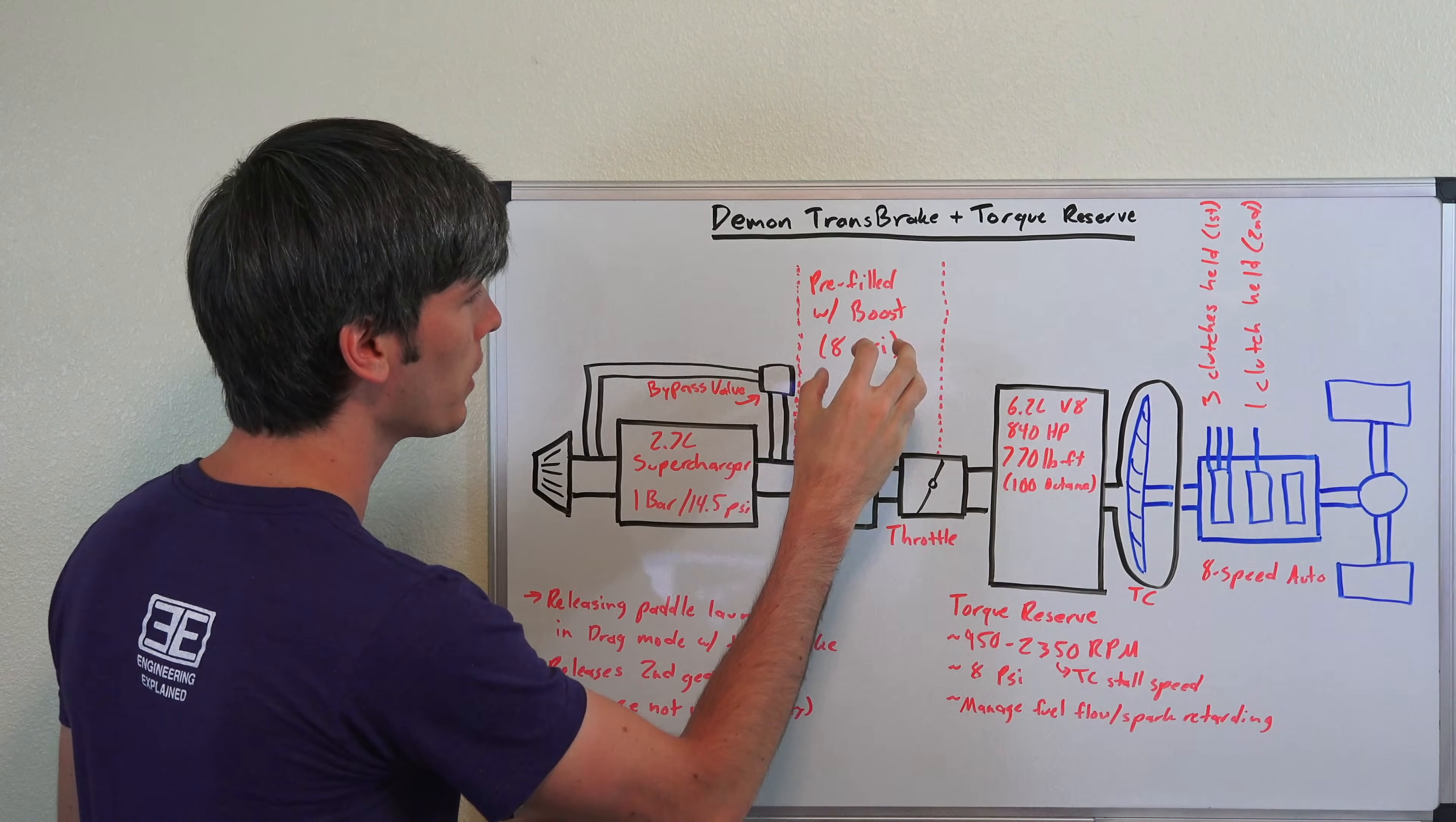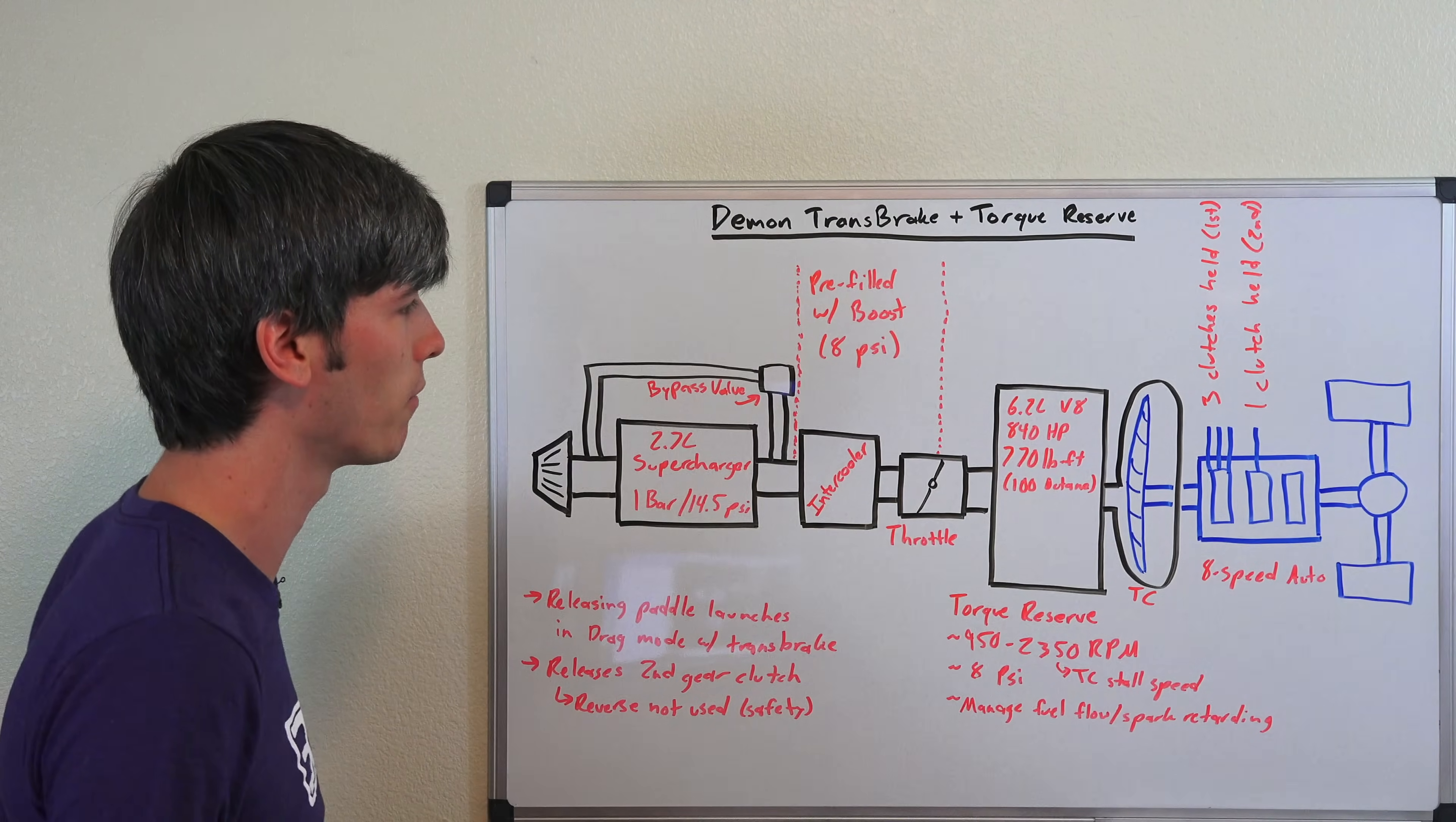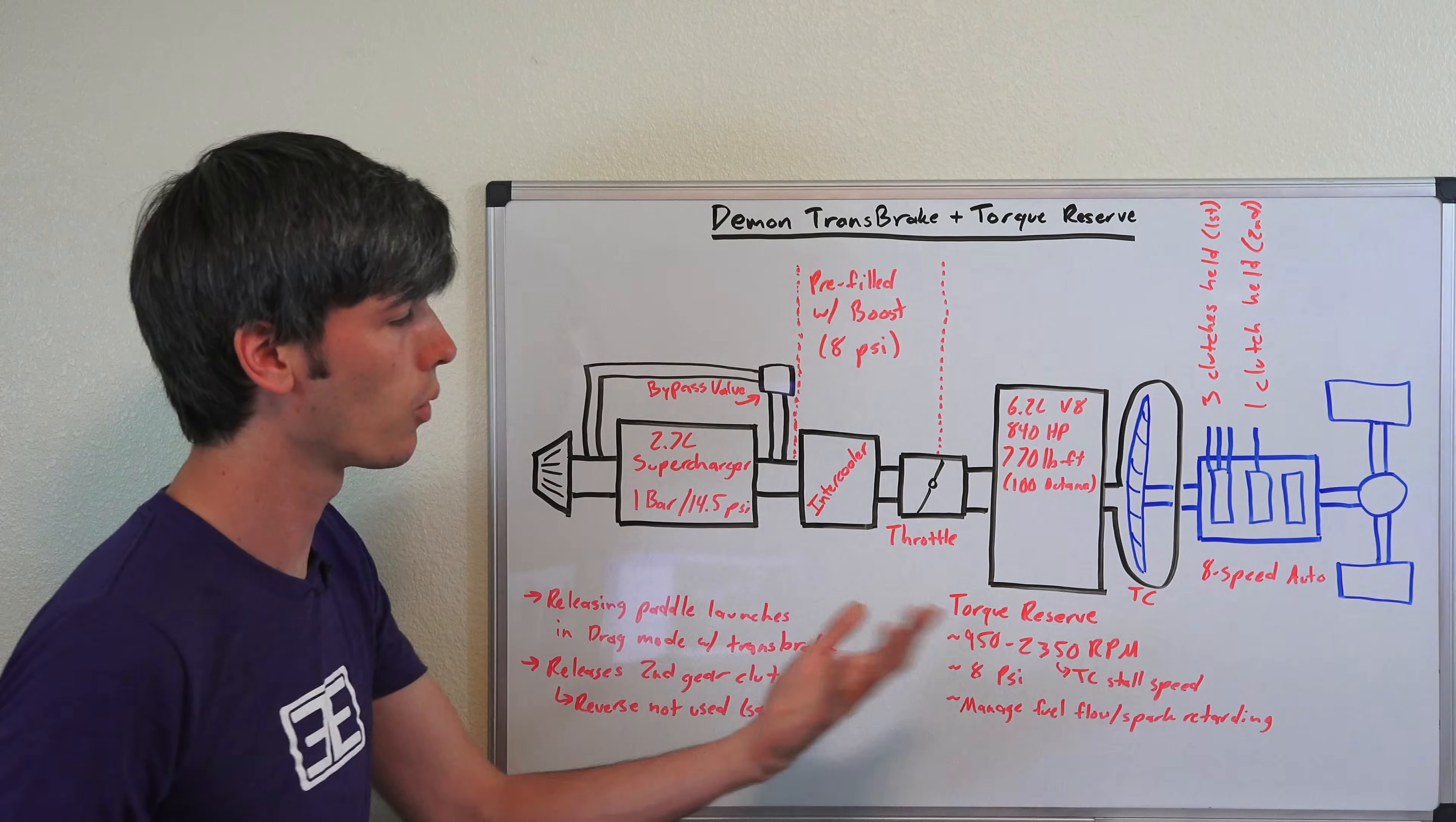And so torque reserve is going to occur basically right here, where you're going to pre-fill after the supercharger but before the throttle with 8 psi of boost and hold your engine RPM between 950 and 2350 RPM, 2350 being the stall speed for the torque converter.